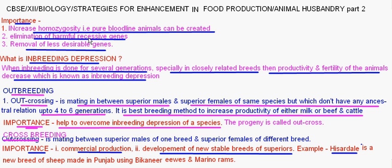Inbreeding depression occurs when inbreeding is done for several generations — especially in closely related breeds — causing the productivity and fertility of the animals to decrease. This reduction in productivity and fertility is called inbreeding depression.